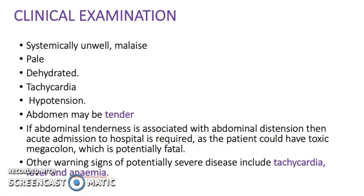For the clinical examination, you want to see if the patient is systemically unwell — pale, dehydrated, tachycardic, hypertensive — and whether their abdomen is tender. If abdominal tenderness is associated with abdominal distension, then acute admission to hospital is required, as the patient could have a toxic megacolon, which is potentially fatal. Other warning signs of potentially severe disease include tachycardia, fever, and anemia.